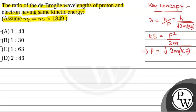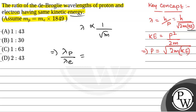Now, if the kinetic energy is the same, we will have lambda inversely proportional to root over mass. So, we will have lambda proton by lambda electron — that is, the ratio of de Broglie wavelength of proton to electron — is equal to root over mass of electron by mass of proton.